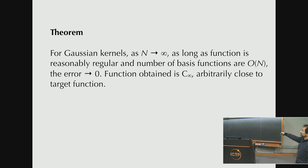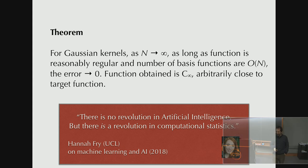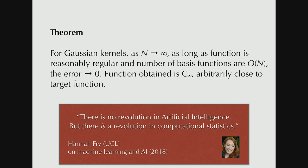And the reason people really like this is it comes with a theorem. So if you use Gaussian kernels as the number of observation goes to infinity, as long as the function you're trying to represent is reasonably regular, and the number of representative configurations is order n, so m is order n, then you're guaranteed that the error goes to zero, as n goes to infinity. And that's a really nice thing. We have a universal approximator. And the function that you obtain is going to be a sum of your kernel function, sum of Gaussians. So it's going to be infinitely differentiable, arbitrarily close to your target function. Whether that is infinitely differentiable or not, you can get very close to it.